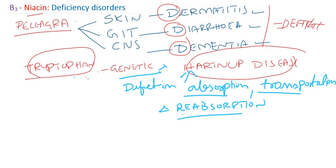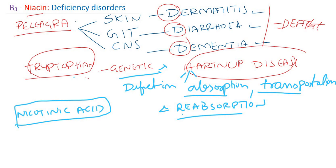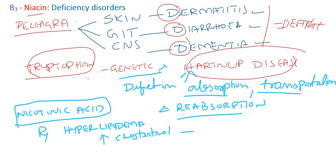Apart from deficiency disorders, niacin in the form of nicotinic acid has a therapeutic use. It can be used to treat hyperlipidemia — for example, high cholesterol. Nicotinic acid is one of the lipid-lowering drugs.